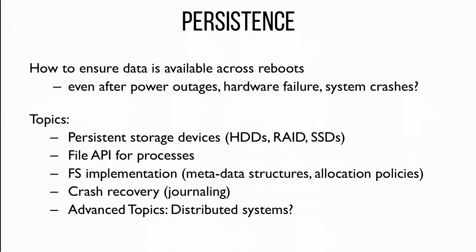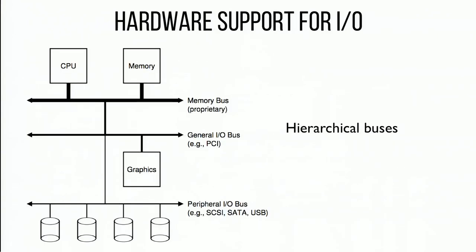Then we're going to move to the top of the stack. We'll talk about what the API looks like for user applications that want to interact with the file system, then how the file system is actually implemented — what the data structures look like, how you allocate particular blocks to get good performance — and then we'll talk about crash recovery and how the file system keeps its data structures consistent regardless of when a crash could occur.